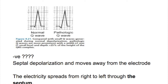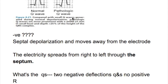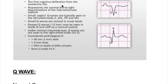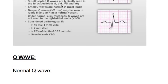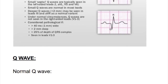We'll discuss Q wave in this video. A Q wave is the first negative deflection of the QRS complex — it should appear before the R in the QRS complex. A negative deflection after the R is an S wave. QS is when the R is absent and there are two negative deflections, known as QS.